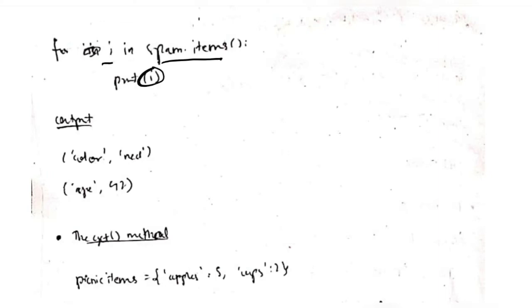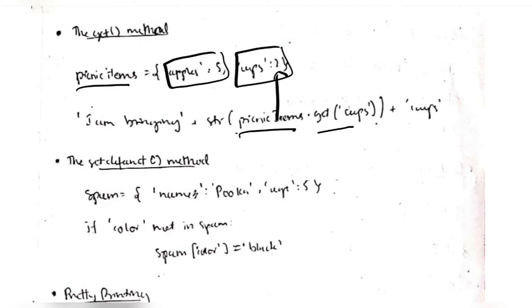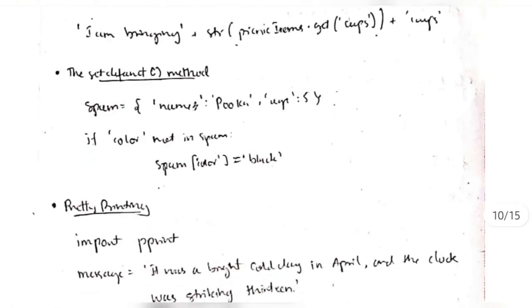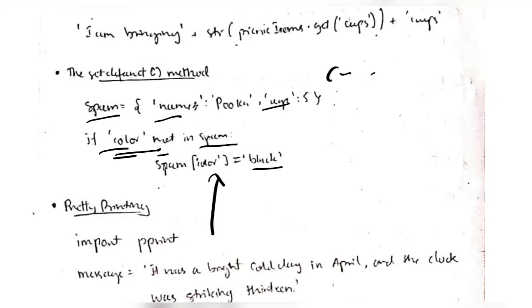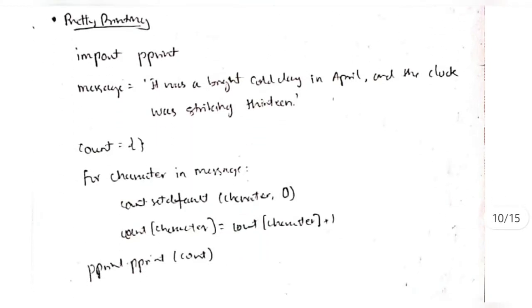The items() method is a combination of both — 'for i in spam.items()' will print the whole key-value pair. The get() method is used to retrieve values: if picnic_items has 'apples': 5 and 'cups': 2, then spam.get('cups') returns 2 and spam.get('apples') returns 5. To add a new key-value pair, check 'if color not in spam, then spam[color] = black' — this inserts the key 'color' with value 'black'. For that we can also use the setdefault method.